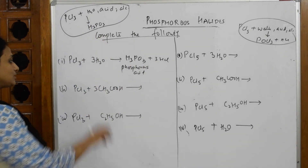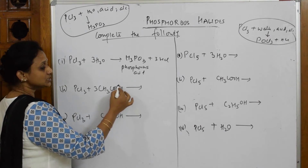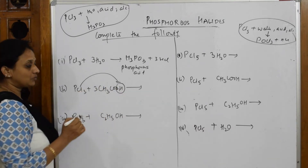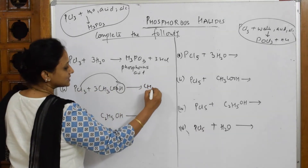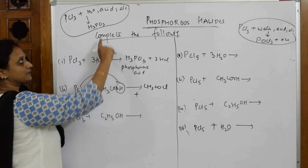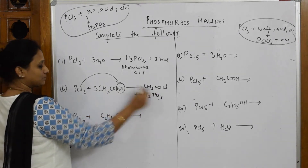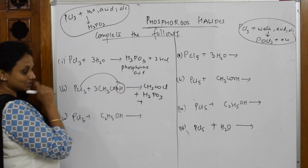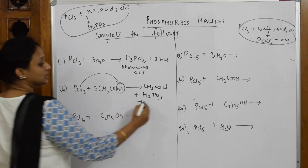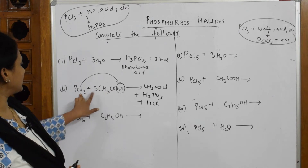When you treat PCl₃ with acetic acid, the OH⁻ is your nucleophile. The Cl⁻ replaces that OH⁻, and you get acetyl chloride (CH₃COCl). Compulsory product H₃PO₃ is also formed. What else is left? You also get HCl. Three chlorines are done — CH₃COCl, H₃PO₃, and HCl.